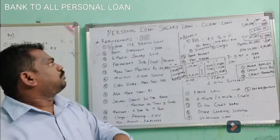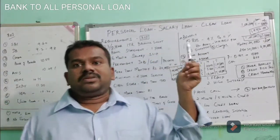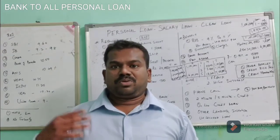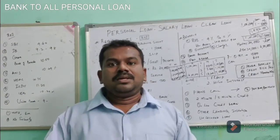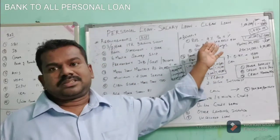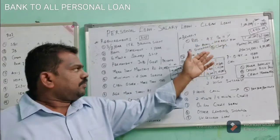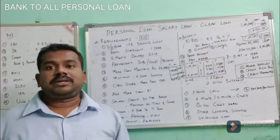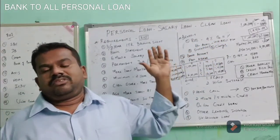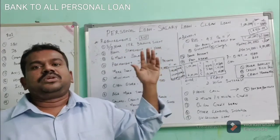Instead of taking a personal loan, salary loan, or clean loan, you can also consider a gold loan. If you can pledge gold, the rate of interest is nearly 7% to 9%. If you don't have gold, then a personal loan with proper documentation is the better option.